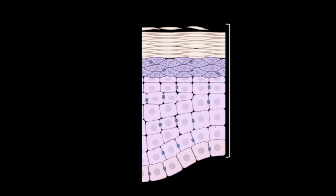Here we're looking at a cartoon of the epidermis in thin skin, sometimes referred to as hairy skin. Recall that skin has several regions—this cartoon shows the epidermis and the dermis, with the hypodermis not shown. Typically, the epidermis contains stratified squamous keratinized epithelium and is divided into four layers.